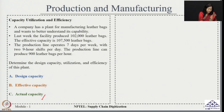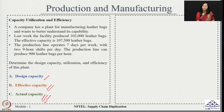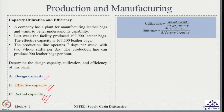We have seen today 3 different types of capacity: design capacity, effective capacity, and actual capacity. Now let us see that if we have this capacity information, how do we use it for calculating utilization and efficiency for the given scenario. Going forward, let us see the formulas for utilization and efficiency.